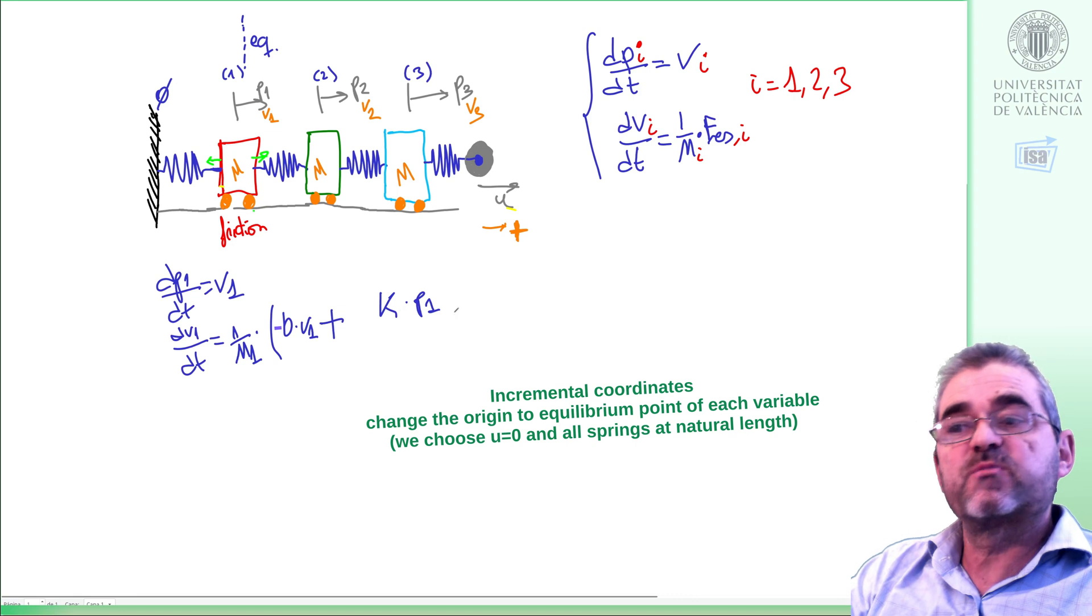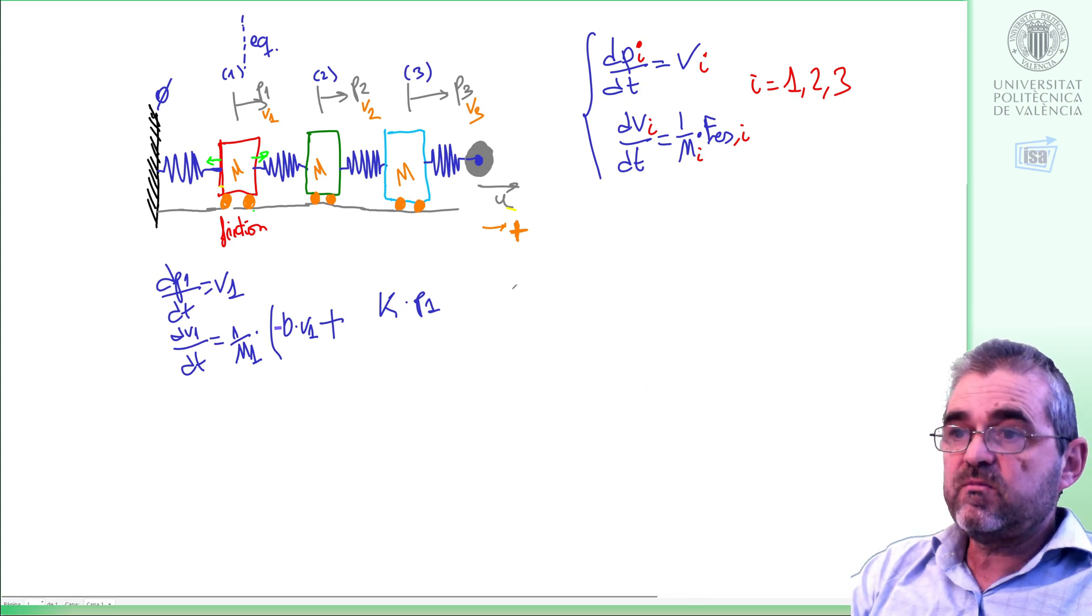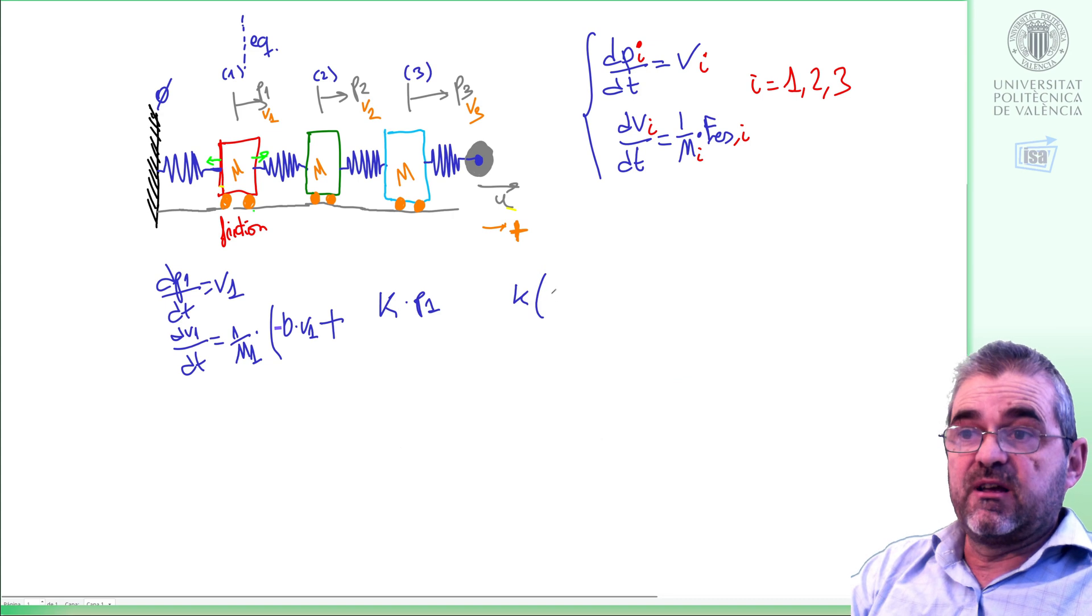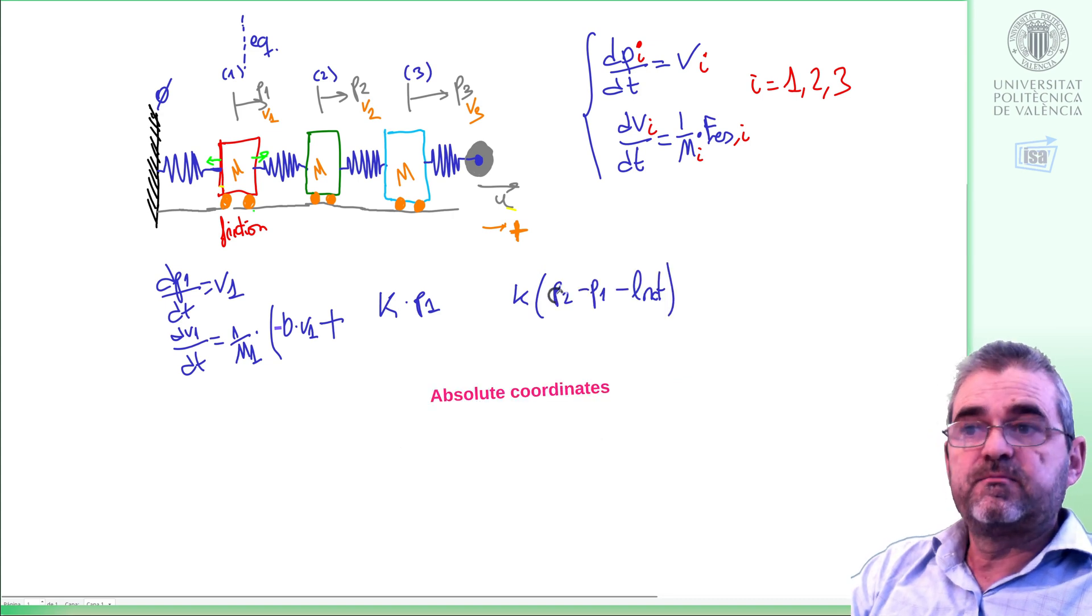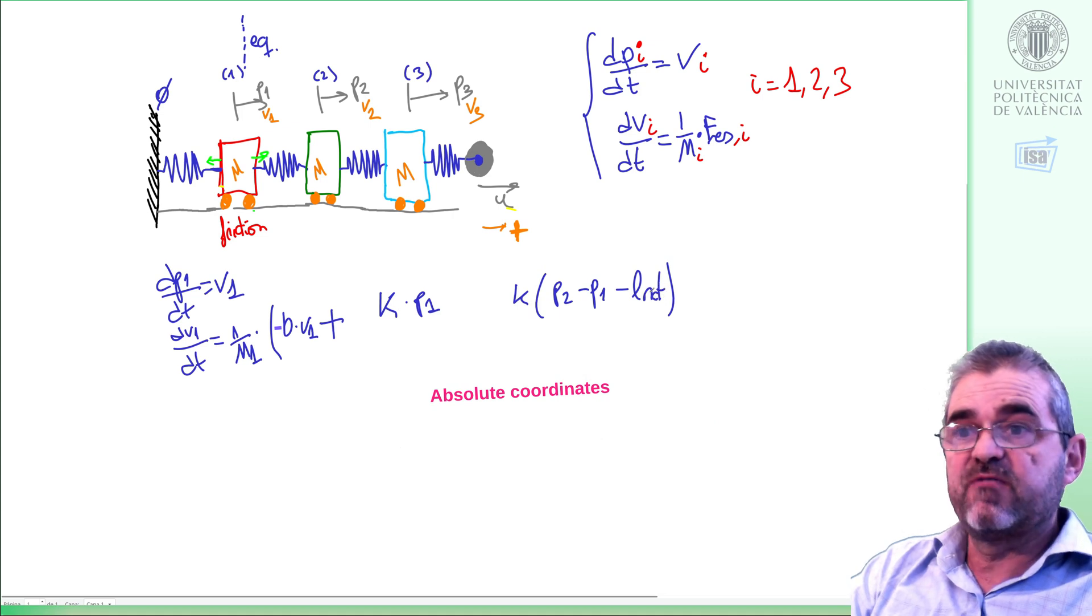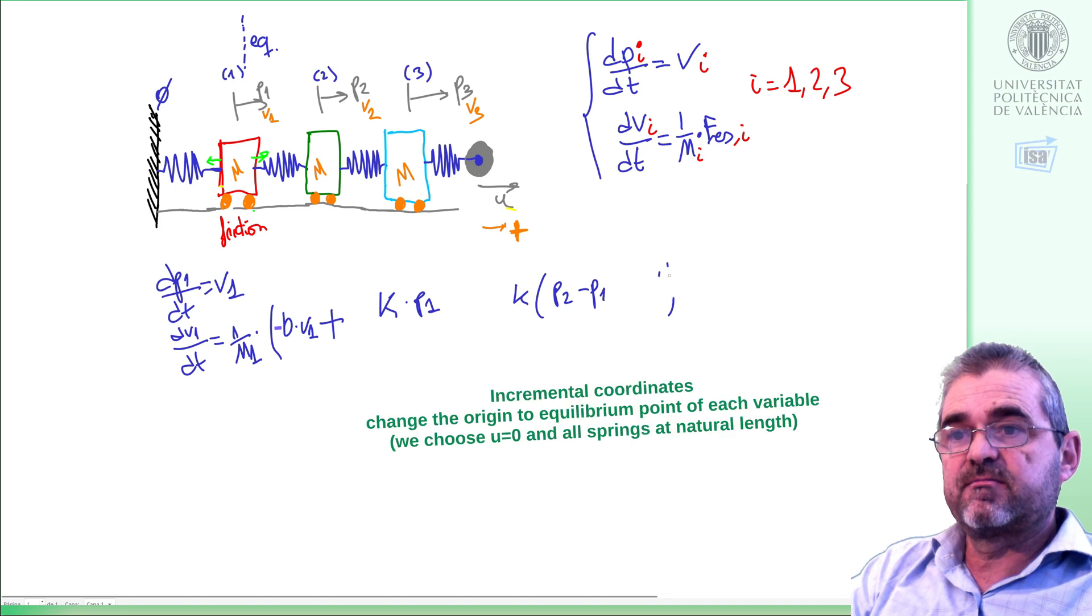So, this is the left spring and the right spring will have a force proportional to, again, the length of the spring, P2 minus P1 minus the natural length if we were in absolute coordinates, but if we are in incremental coordinates, this constant disappears, and we write it like this.